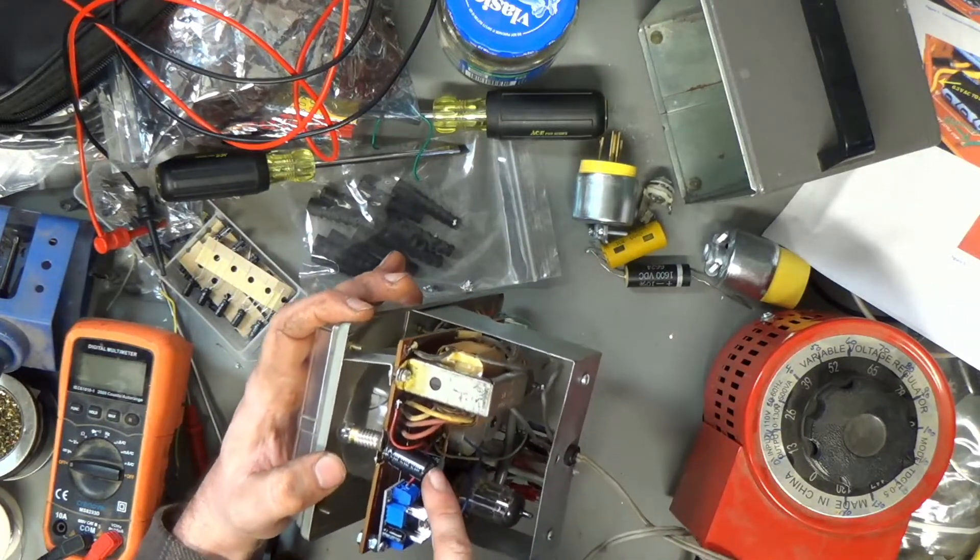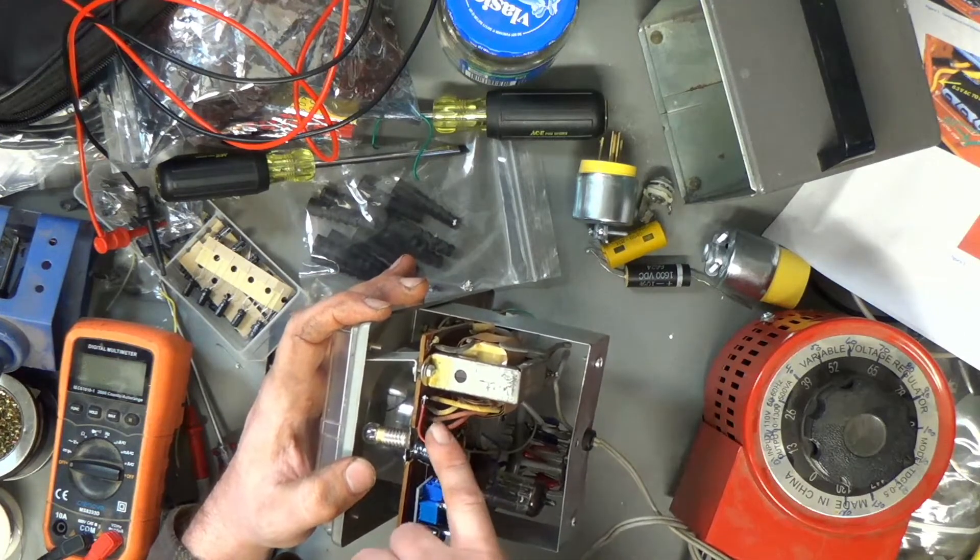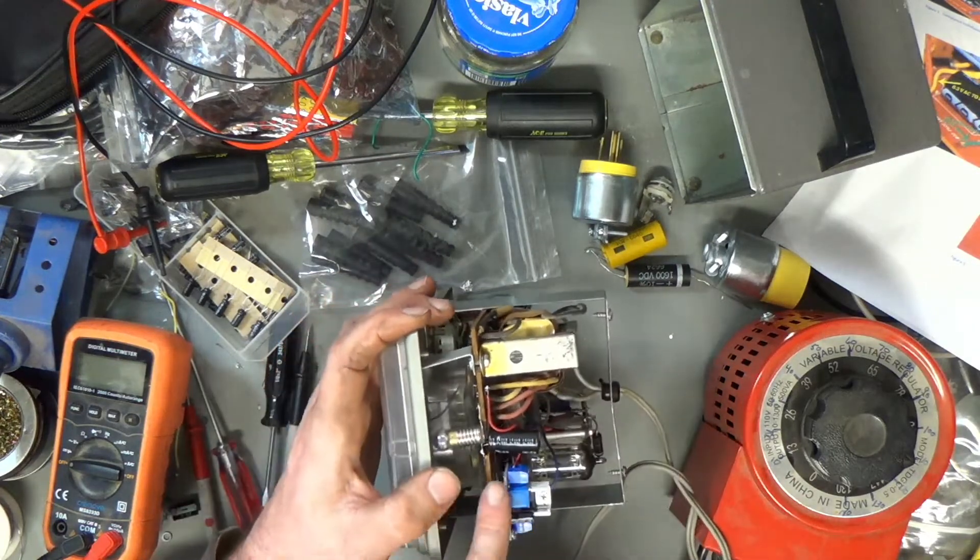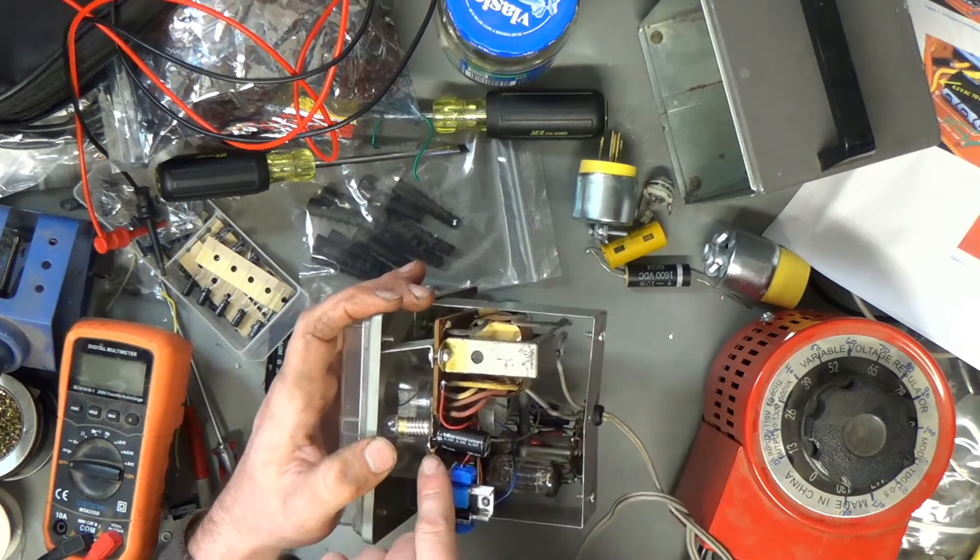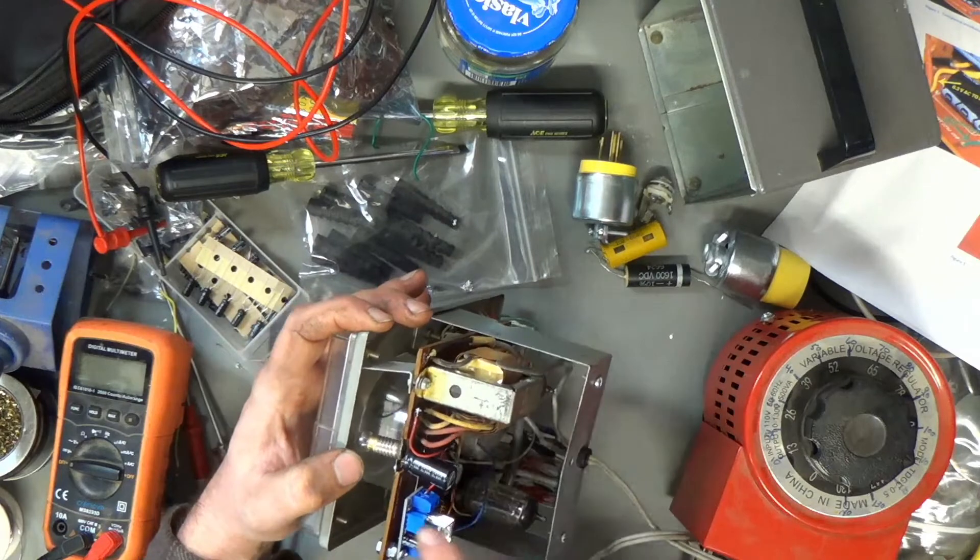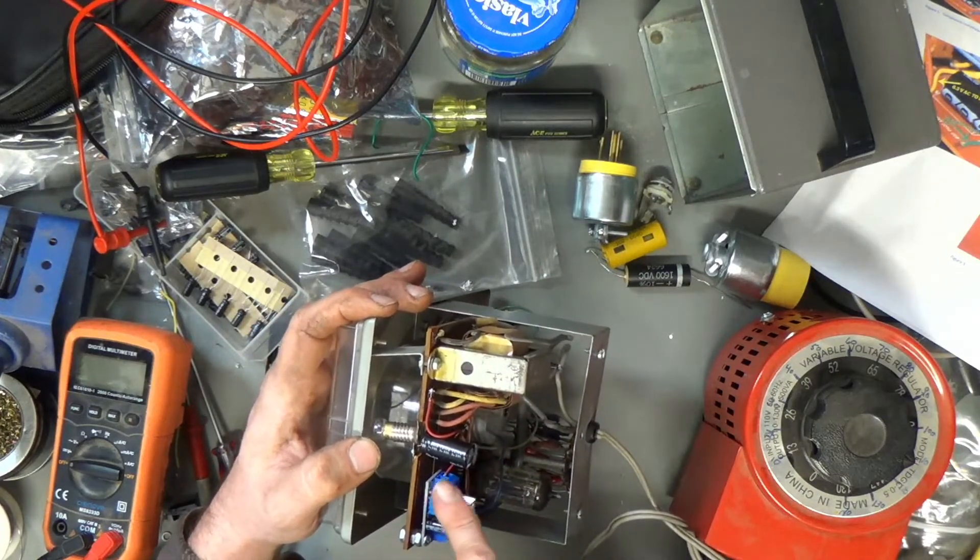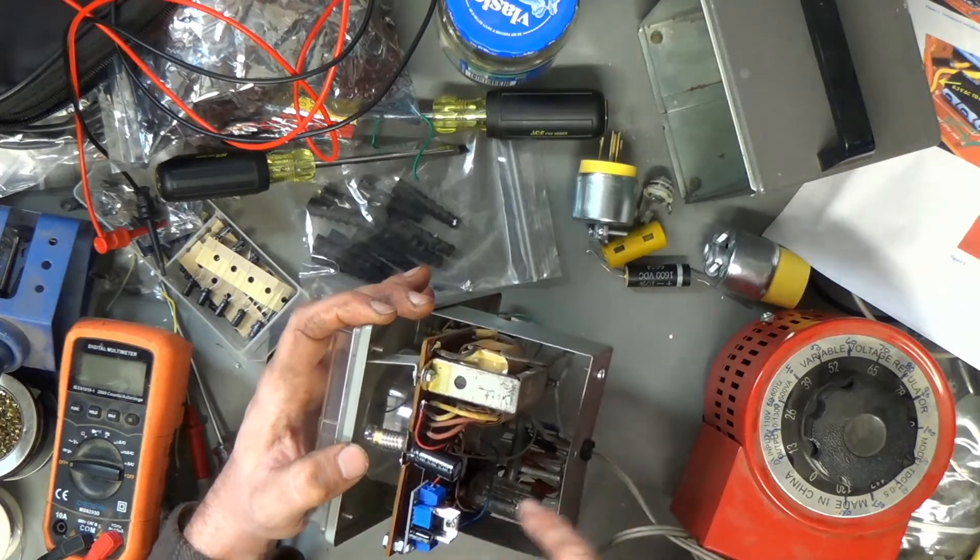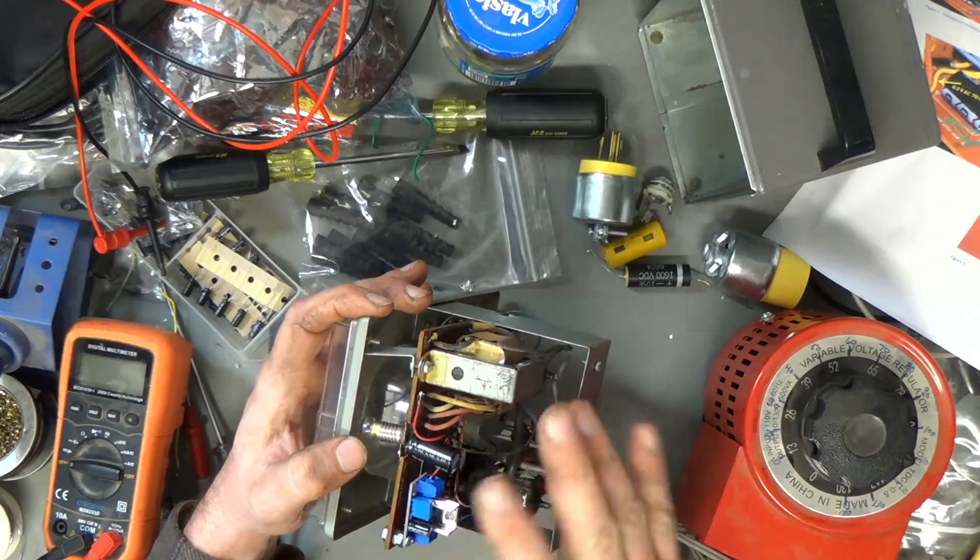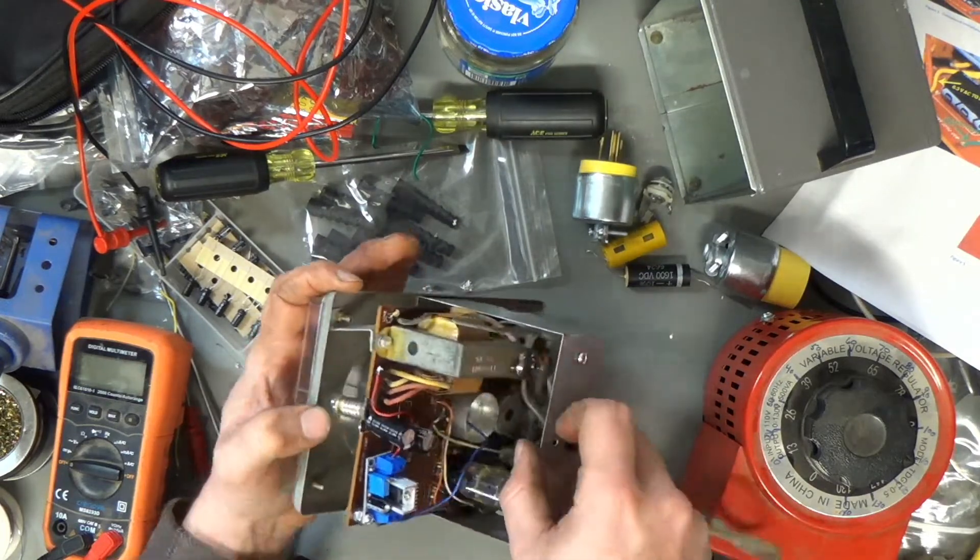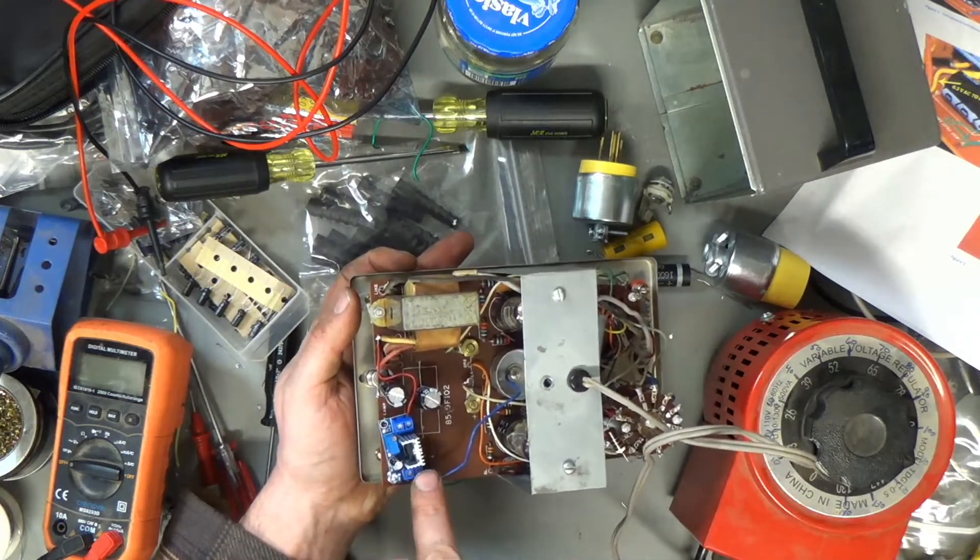I've got this 1000 microfarad filter capacitor soldered onto that, grounded to the light socket negative side there. It's an AC light but the grounds are all tied together, a little funny but anyway. This will give us like seven volts DC or something, and I've got it coming over here into the input of that LM317 module.